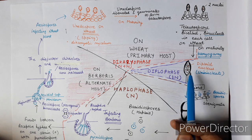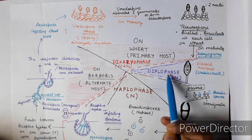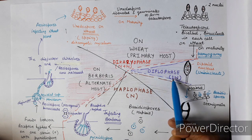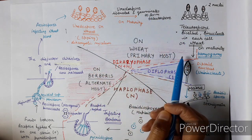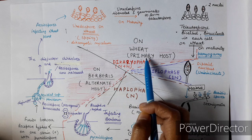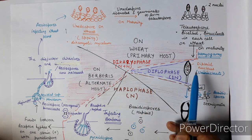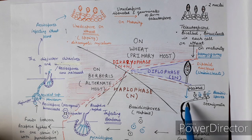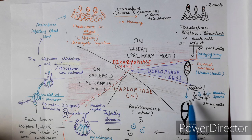This is the diplophase in the life cycle of Puccinia, because the nucleus exists in diploid condition. All these stages take place on wheat, the primary host of Puccinia. Then the diploid nucleus of the teleutospore undergoes meiosis, giving rise to a long tube-like structure which later forms four structures called sterigmata.